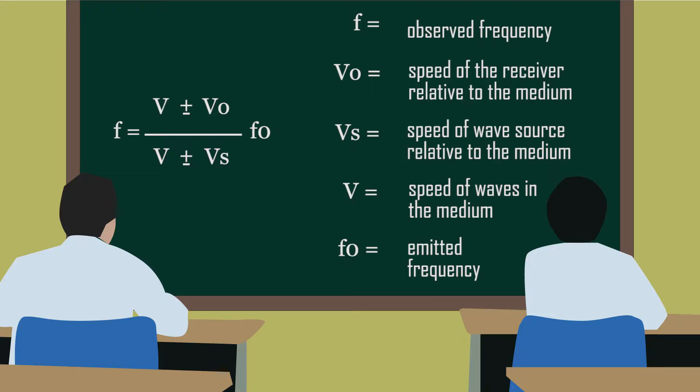As a result, Doppler effect is taught as observed frequency equal to the speed of waves plus or minus the speed of the receiver relative to the medium, times the emitted frequency, divided by speed of wave plus or minus the speed of wave source relative to the medium.